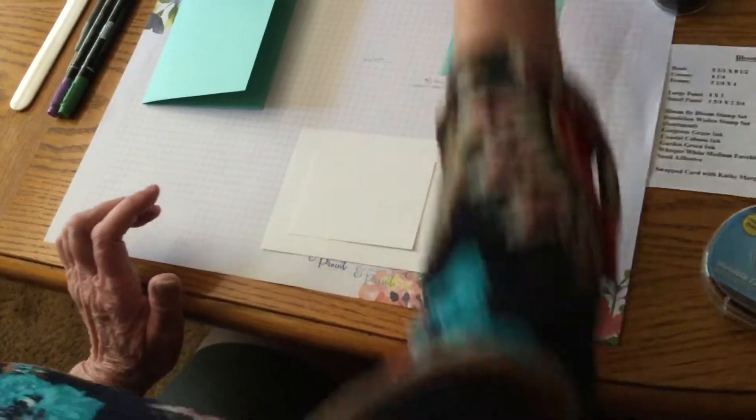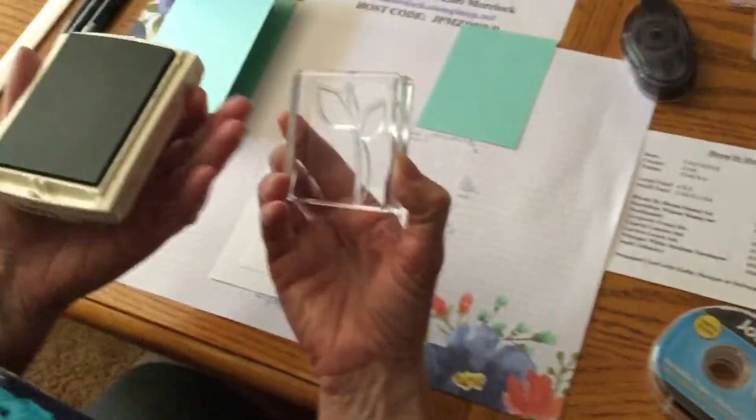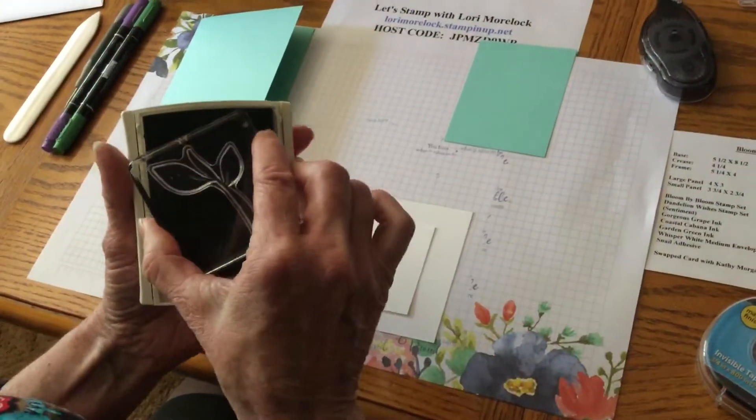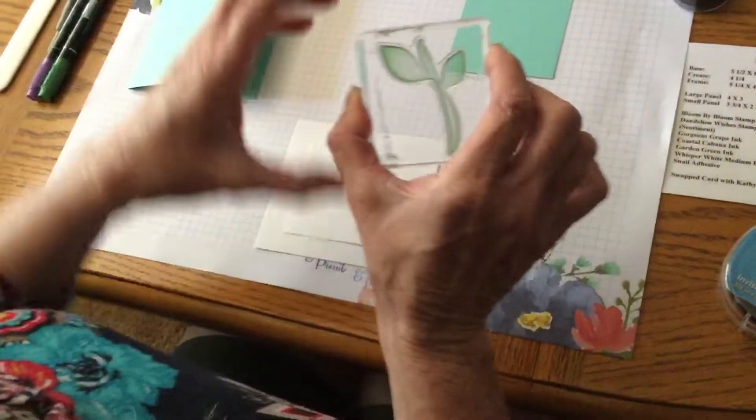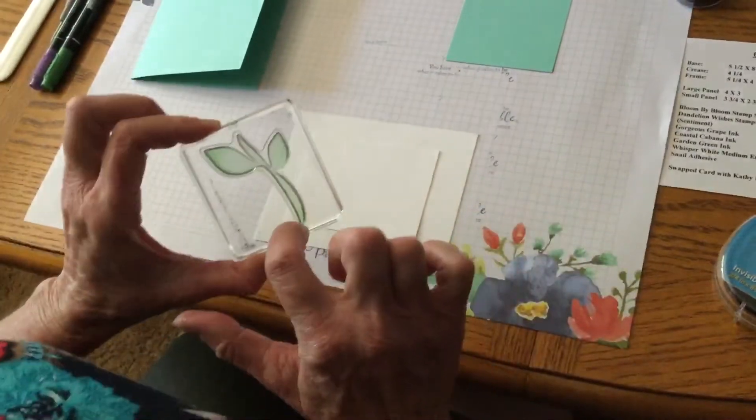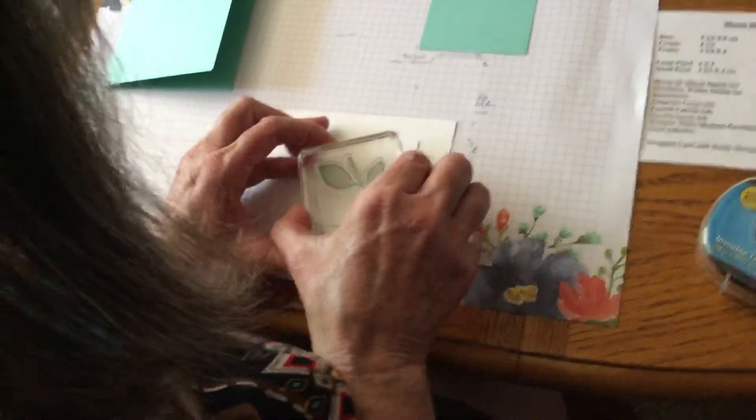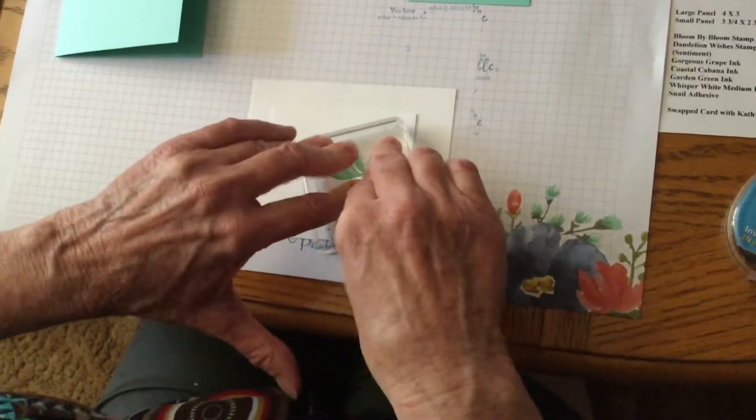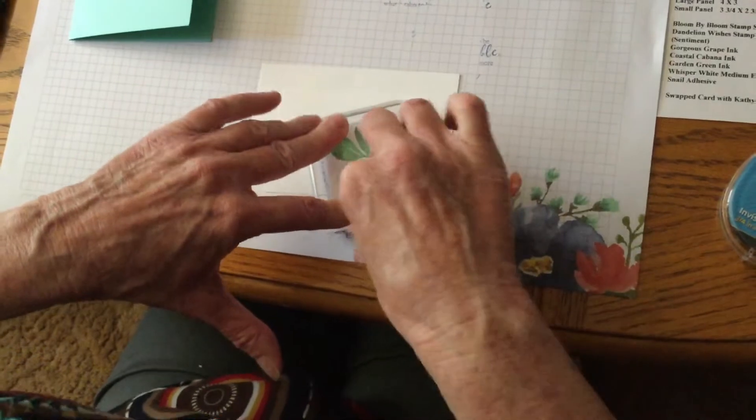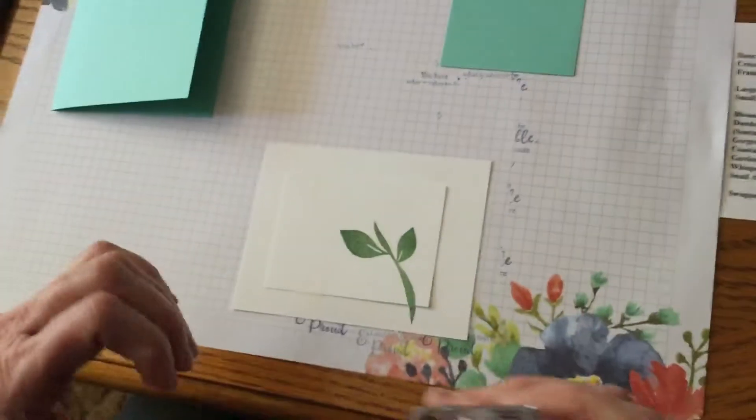I'm going to use Garden Green, and first I'm going to use my big leaf and stem. I'm just going to press that up there real good, and I'm just going to let the bottom hang over this little ledge here. And I'm going to press down, and you want to press down as hard as you can, so you can see the ink lifting off your stamp onto your cardstock. And there you go.